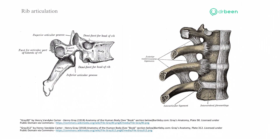Here is the diagram. First, we look at the rib articulation. This is a vertebra and this is where the rib articulates. Here is a rib attached to the vertebra — the head is here and then the rest of the rib is here.